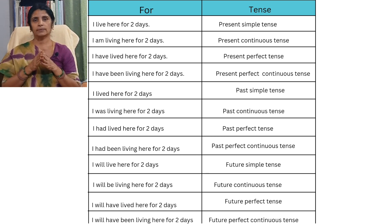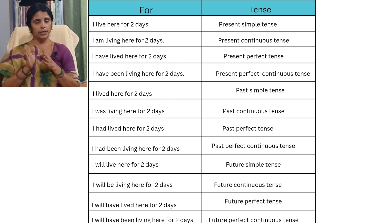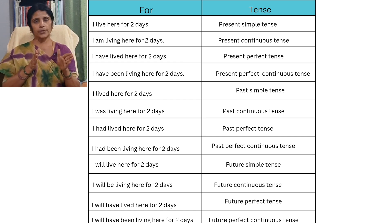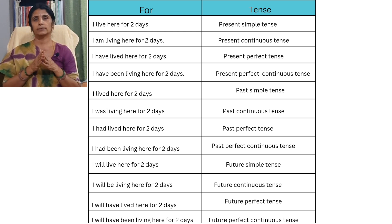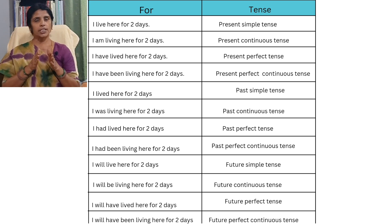'I lived here for two days' — past simple tense. 'I was living here for two days' — past continuous tense. 'I had lived here for two days' — past perfect tense. 'I had been living here for two days' — past perfect continuous tense. 'I will live here for two days' — future simple tense.